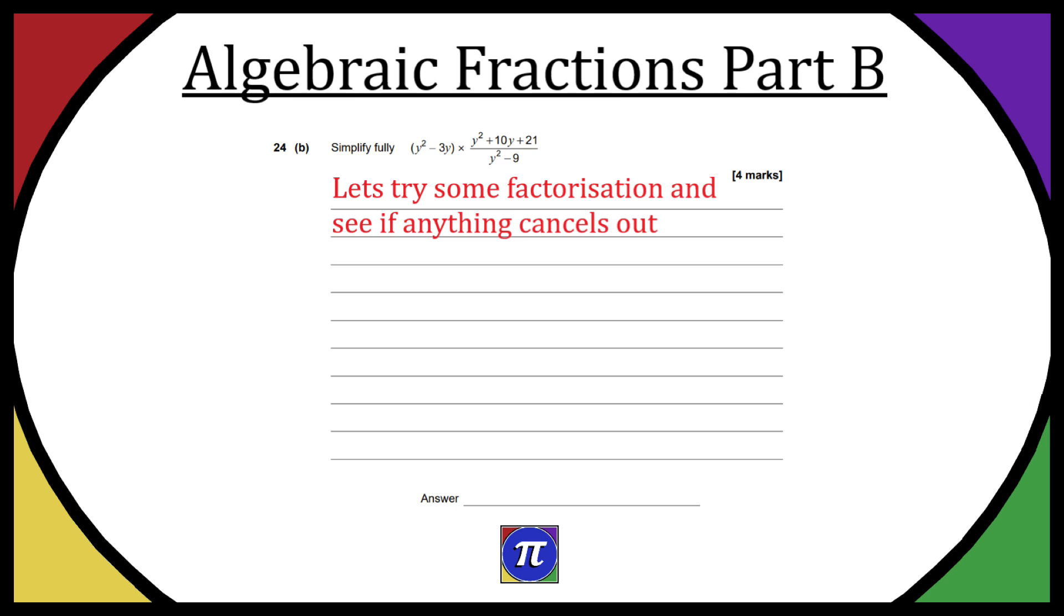I'll do this one piece at a time, splitting it into three components: y² - 3y, then y² + 10y + 21, and y² - 9. For y² - 3y, we can take out a y, giving us y(y - 3). For y² + 10y + 21, we put it in brackets like this.